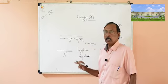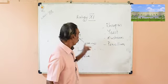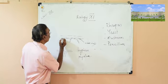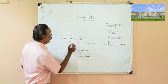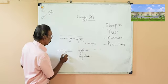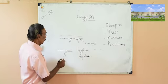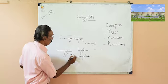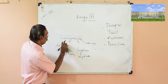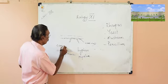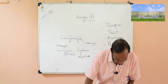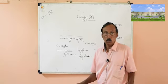The hypha can be tubular or with cross holes (septa). If they have no cross holes, you can see many nuclei inside — nucleus after nucleus — because it is made up of many cells but with no cross walls. When many nuclei are present like this, this condition is called the coenocytic condition.